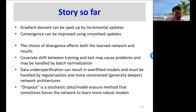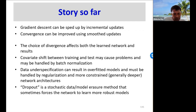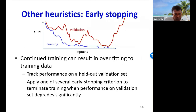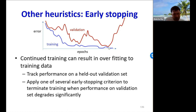Here's the story so far: gradient descent can be sped up by incremental updates; convergence improved using smooth updates; the choice of divergence affects learned network and results; covariate shift between training and test may be handled by batch norm; data underspecification can result in overfitted models and must be handled by regularization and more constrained network architectures; dropout is a stochastic model erasure method that forces the network to learn more robust modules. Early stopping is another heuristic — we track performance on held-out validation data and stop training when validation performance begins to worsen, preventing overfitting.